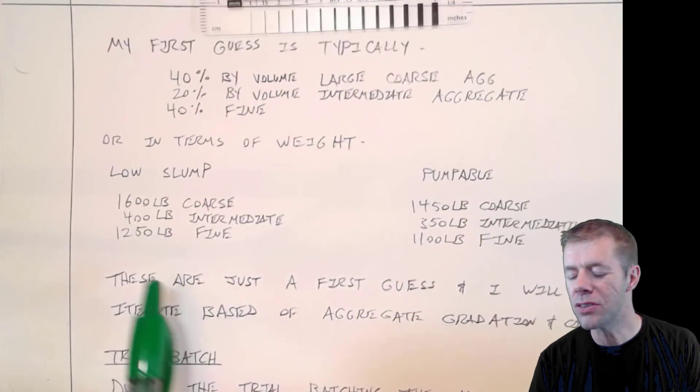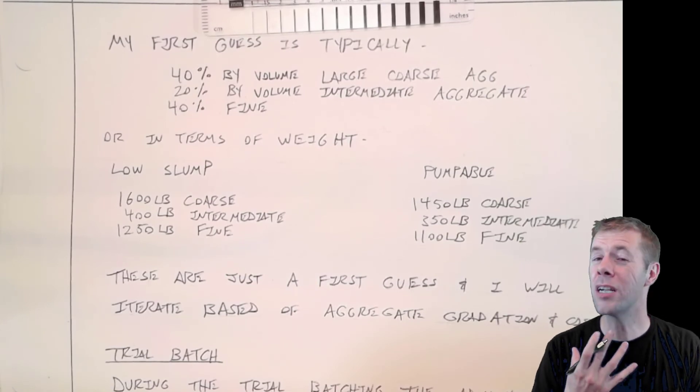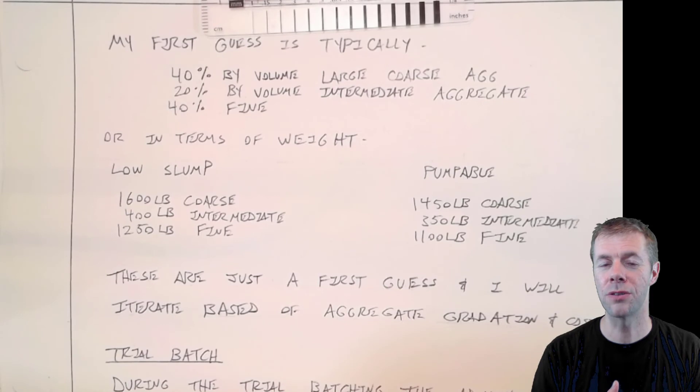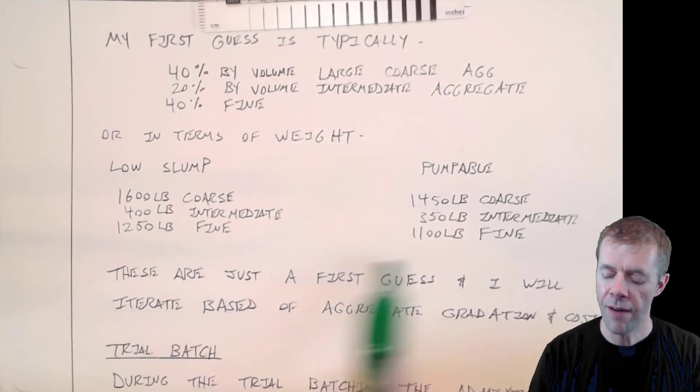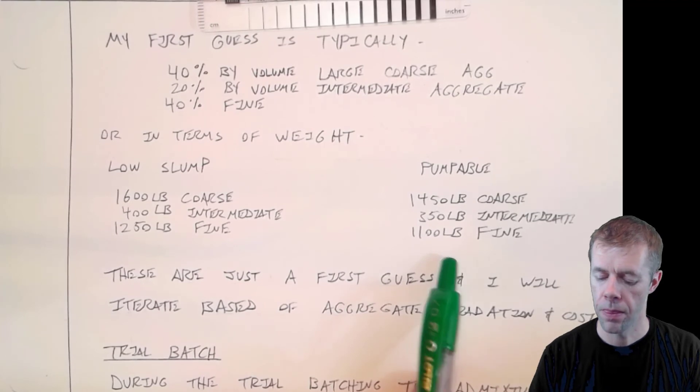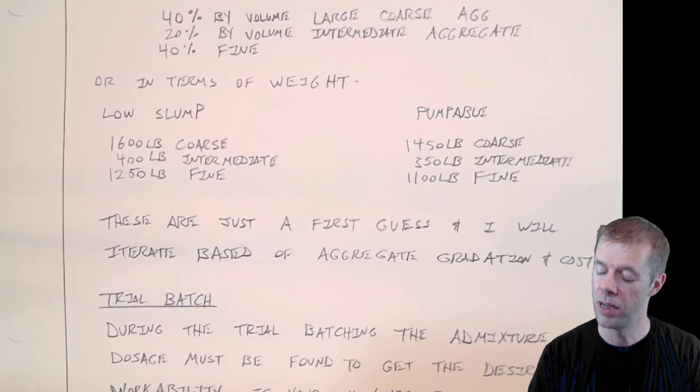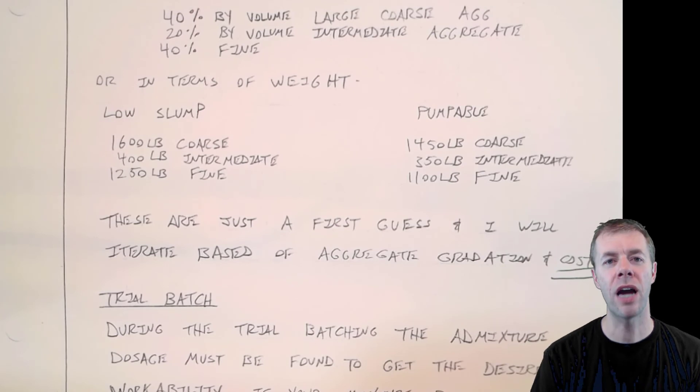Or you can think of this in terms of weight. And these numbers are going to change depending on a lot of stuff, your specific gravities, your volume of air. It's going to depend. But again, this is just a first guess if you have specific gravities that are typical of coarse aggregates and fine aggregates used in concrete. If I have a low slump mix, I'm going to start out something like this. If I have a pumpable mix, I'm going to start out something like this. These are just a first guess. And I'm going to iterate based on the aggregate gradation. Also, the cost is big time. This is a huge advantage of the Tarantula Curve. You can actually take into account the cost of the different aggregates. We've already minimized the amount of binder in the mixture. So we're minimizing that cost. Now we can choose from lots of different sources to help to minimize the cost of the concrete mixture even more.